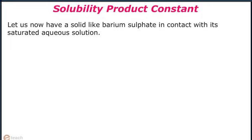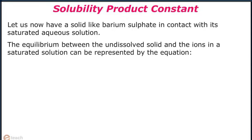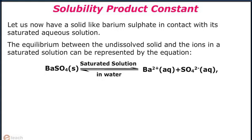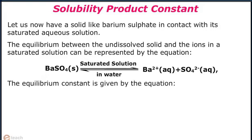Solubility Product Constant: Let us now consider a solid like barium sulphate in contact with its saturated aqueous solution. The equilibrium between the undissolved solid and the ions in a saturated solution can be represented by the equation: BaSO4 reversible Ba²⁺ plus SO4²⁻. The equilibrium constant is given by K equals concentration of Ba²⁺ multiplied by concentration of SO4²⁻, divided by concentration of BaSO4.